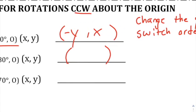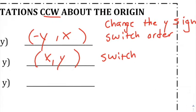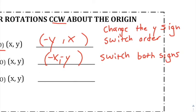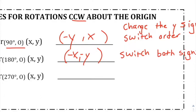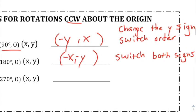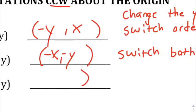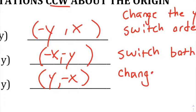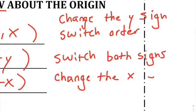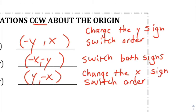For 180 degrees, you actually keep the same order but switch both signs — throw negatives out in front of both. For 270 degrees, it's similar to 90 degrees: you switch the order, but then you change only the X sign. So change the X sign, then switch order.